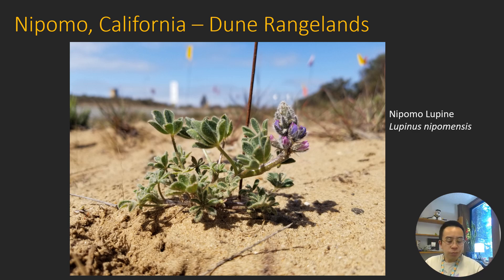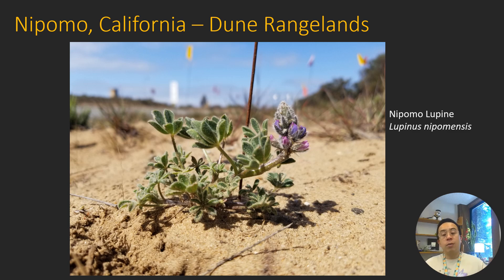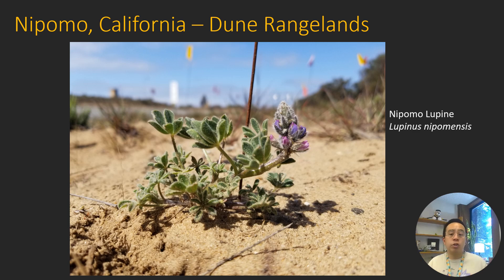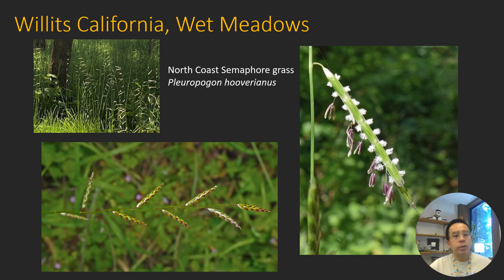Grazing is only allowed on these dune rangelands from about June until around November when the lupines aren't actively growing. Managers take cattle off during active growth seasons to ensure populations aren't grazed too heavily, so they aren't trampled and can survive, persist, and support future populations. Interestingly, a population was recently rediscovered on the oil field that had been grazed continuously year-round and actually had huge populations — a few hundred plants — showing how timing and intensity can be effectively manipulated for endangered species management.